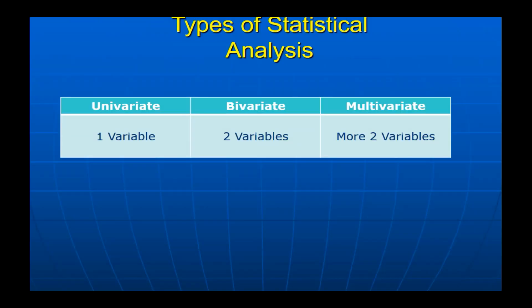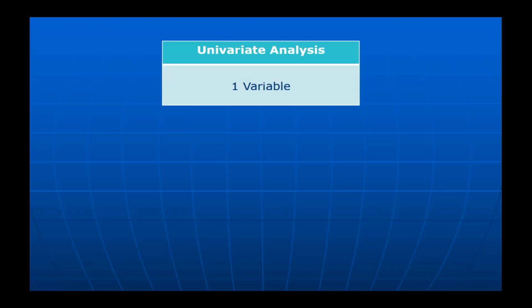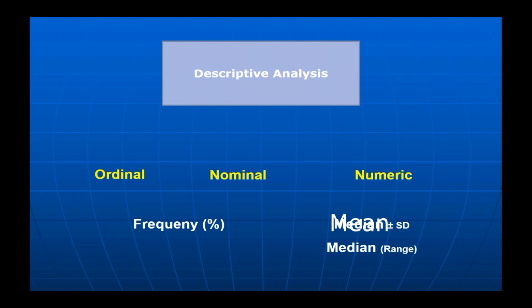Simply, we can divide statistical analysis into three main types: univariate, bivariate, and multivariate. Univariate means analyzing a single variable — for example, analyzing age alone, or gender alone, or tumor stage alone. There is no comparison in univariate analysis, and therefore no p-value. A frequent mistake is assigning a p-value to univariate analysis — univariate is purely descriptive analysis.